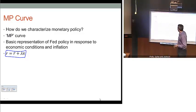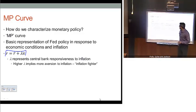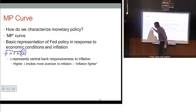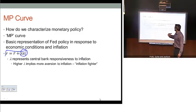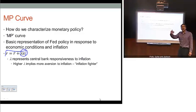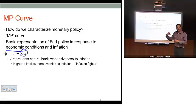We have this component where the inflation rate is multiplied by lambda. That lambda represents how responsive the central bank is to changes in the inflation rate. Intuitively, a higher lambda means the central bank is going to be more of an inflation fighter or an inflation hawk. If inflation goes up and lambda is higher, that's going to result in a much higher increase in the real interest rate.